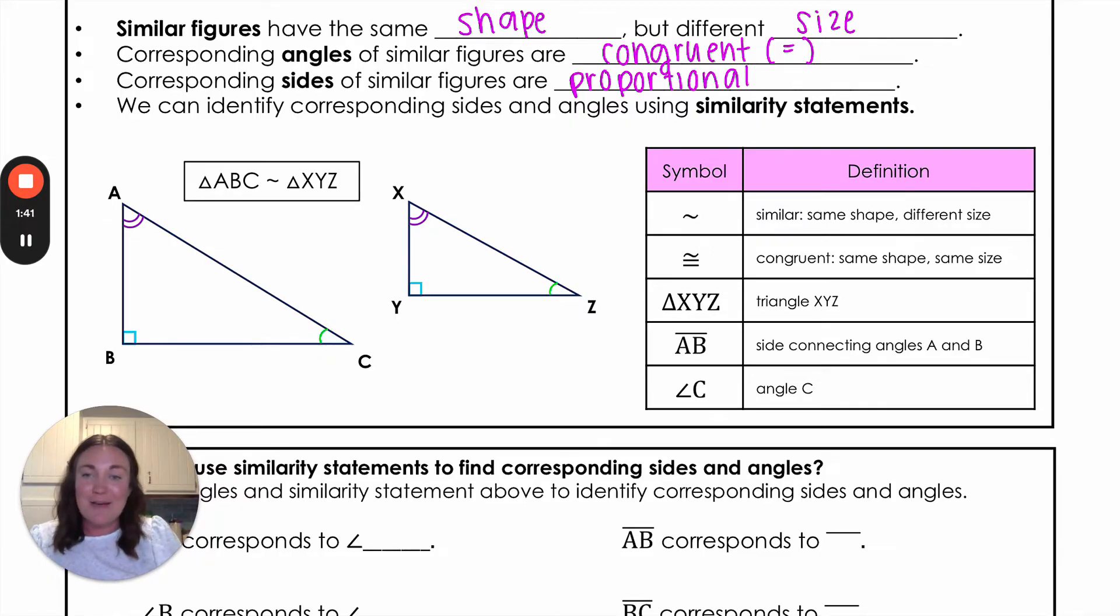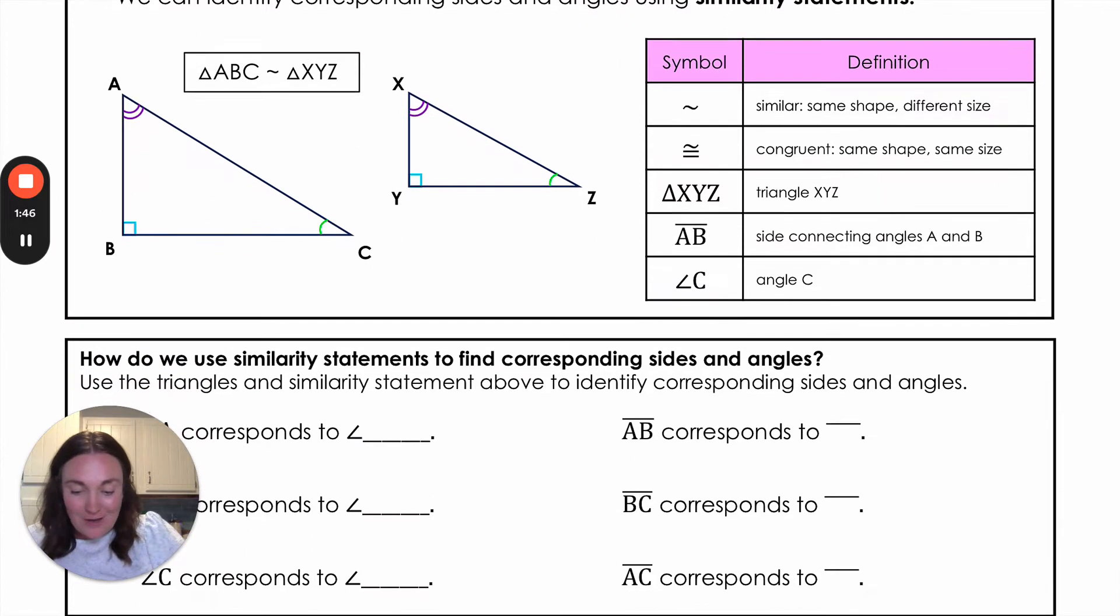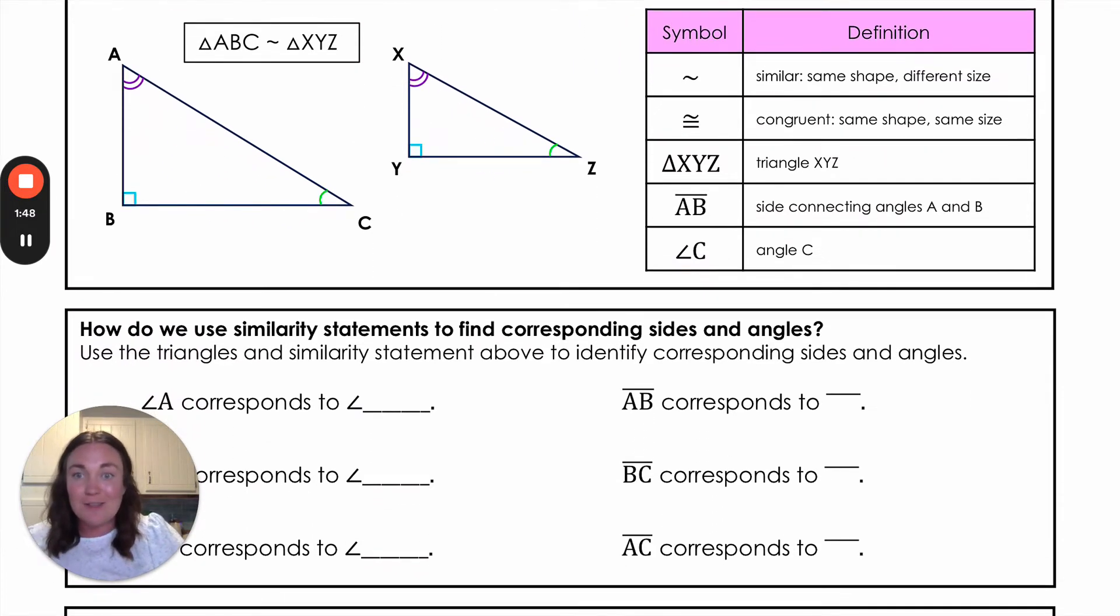Let's talk about how we take that similarity statement and find those corresponding sides and angles. I like to have my students take that similarity statement and then rewrite them where the letters are on top of each other kind of in this little chart. I'm going to take that ABC and I'm going to write it on top of XYZ, and we always write it in the exact same order that it's given to us, so that's very important.